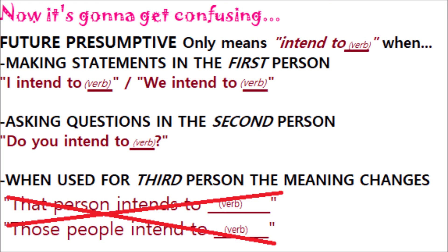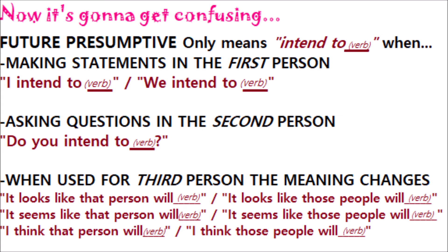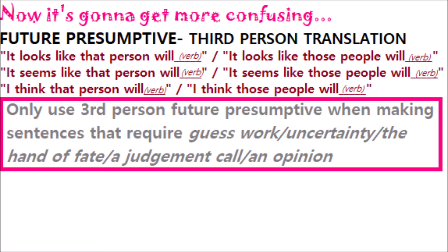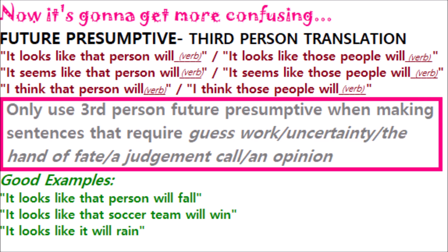Unless you're some kind of psychic mind reader! So when you use future presumptive in the third person, the meaning changes significantly. What it translates to is: 'It looks like that person will blank,' or 'it seems like that person will blank,' or 'I think that that person will blank.' This sort of third-person sentence makes more sense in some situations than others — it's best used to describe things which require guesswork, like 'it looks like that person will fall,' 'it looks like that soccer team will win,' or 'it looks like it will rain.'